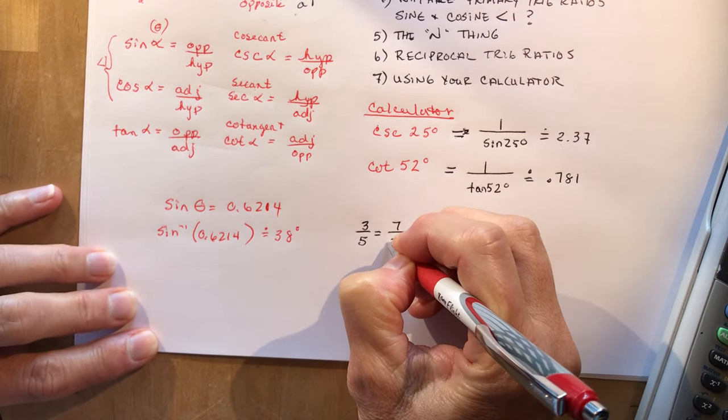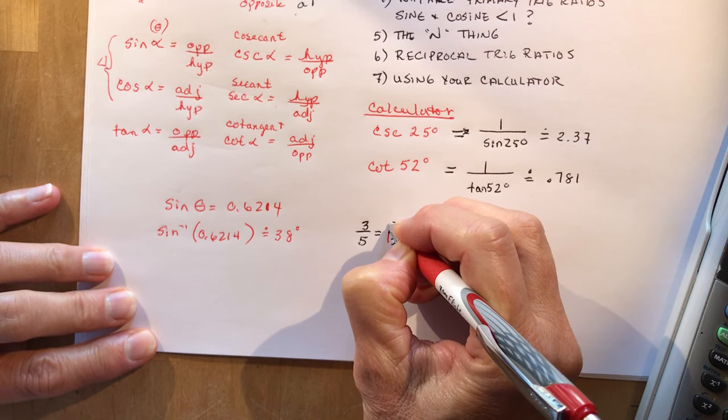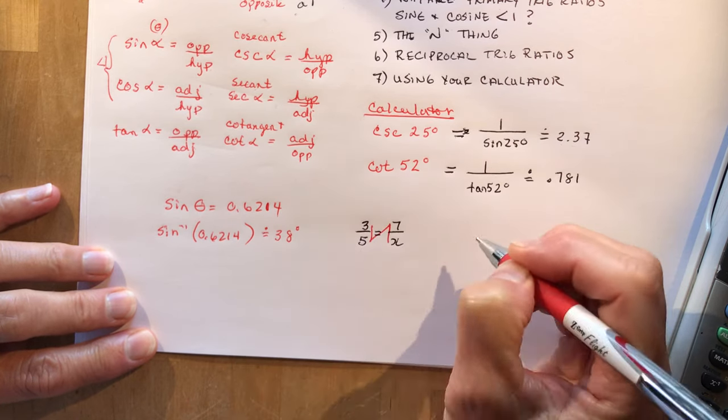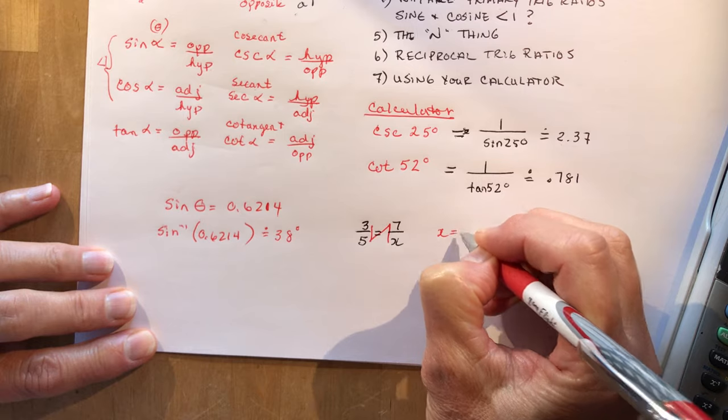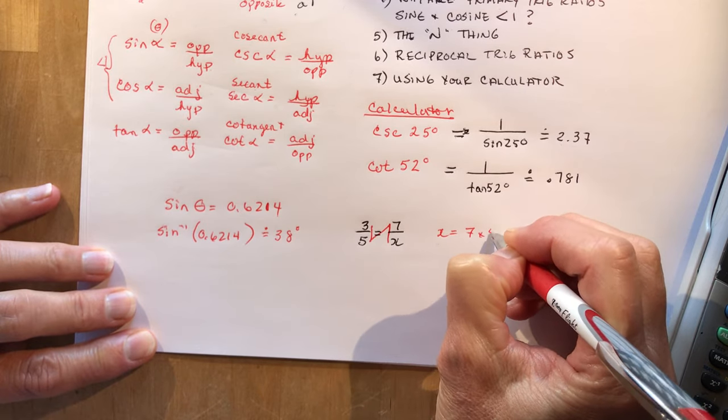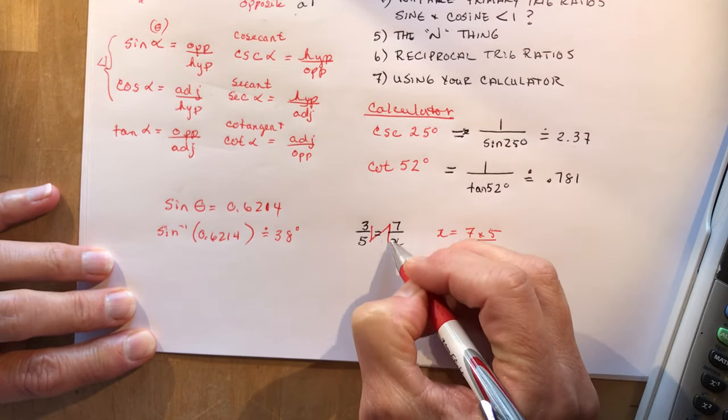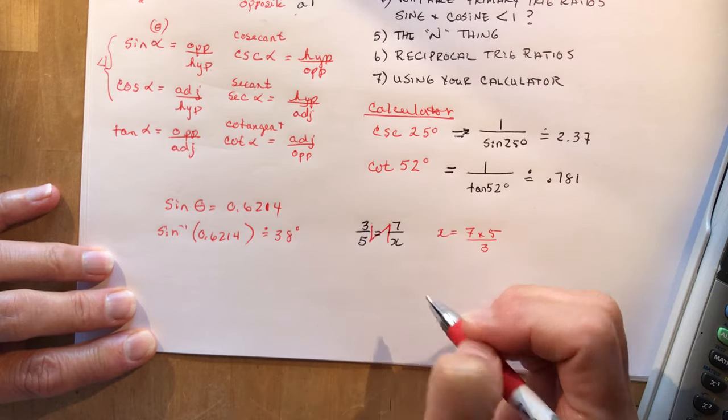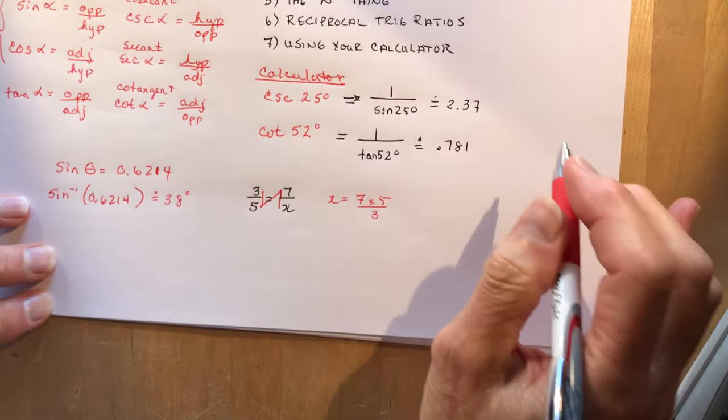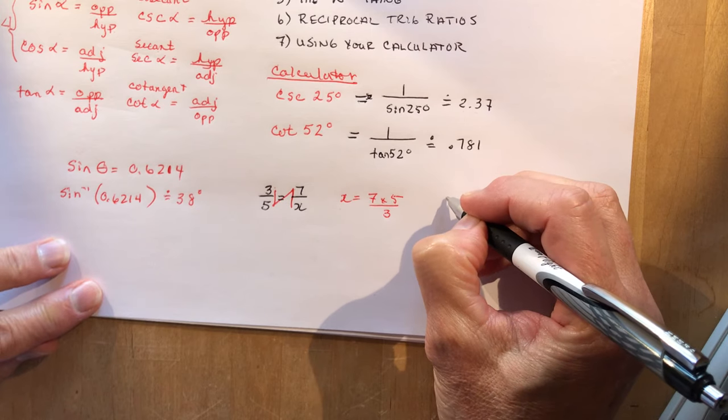The N thing says I start with the unknown and I have to go up or down. So in this case I would have to go up. I go on the diagonal and I go up again. So that means x is equal to 7 times 5 divided by 3. So it's right there, this times this divided by that.